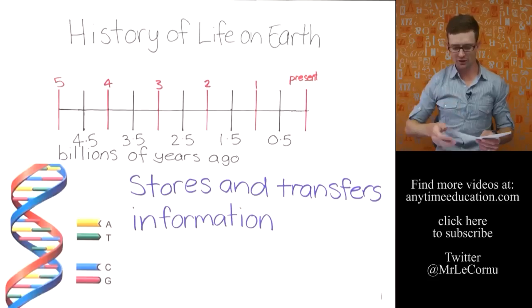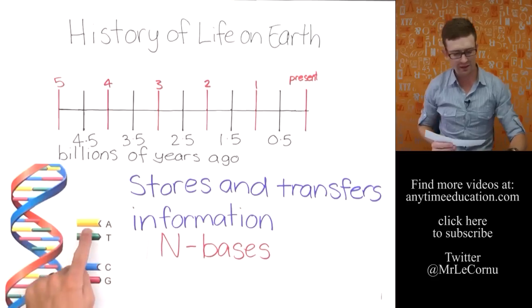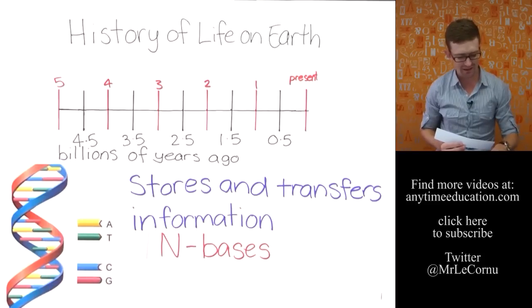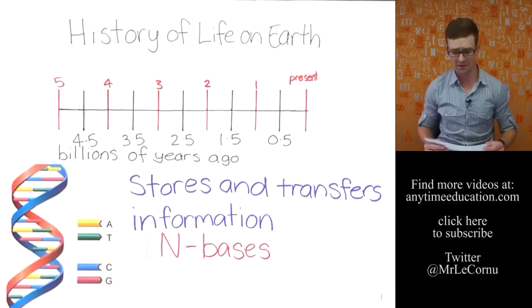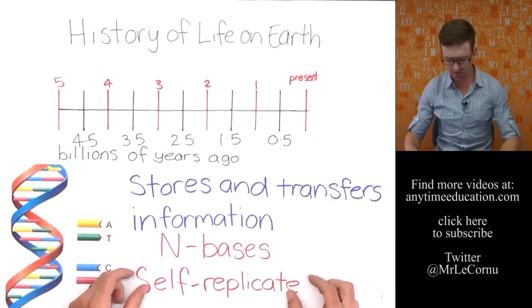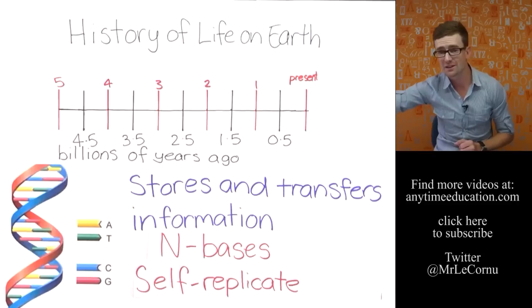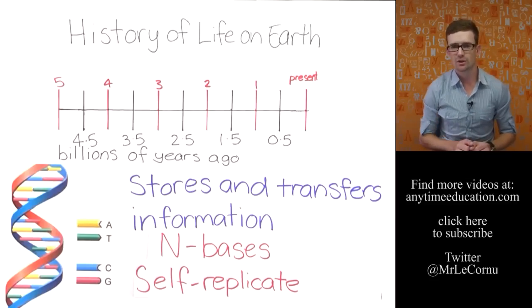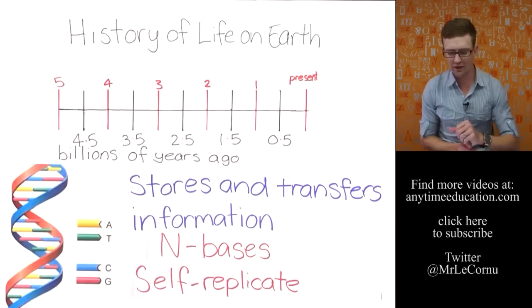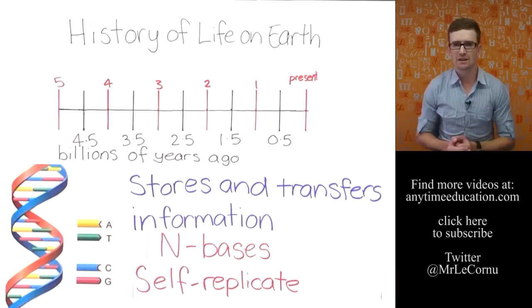The reason DNA is so good at storing and transferring information is for two main reasons. One is the nitrogen bases, the A's, T's, C's, and G's, which are able to carry a language or the genetic code which we know it to be. The other ability is for it to self-replicate, which is another reason why it's so good at storing and transferring information. By replicating, the DNA can be passed on from one cell to another. So the arrival of DNA was a critical one for storing and transferring information and for diversifying and increasing the complexity of life on earth.